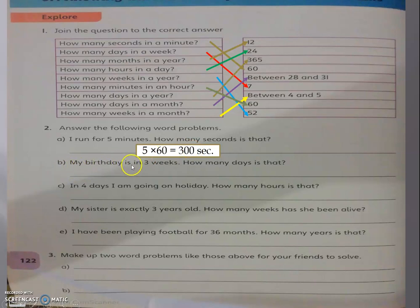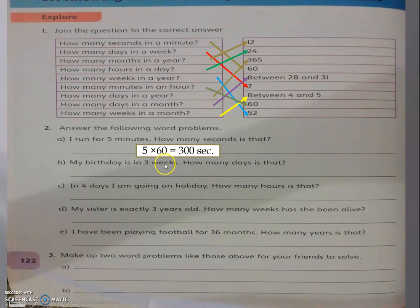Question 2B: My birthday is in 3 weeks. How many days is that? Weeks to days — big to small — so I multiply. One week equals 7 days. I have 3 and 7, so 3 times 7 equals 21 days.